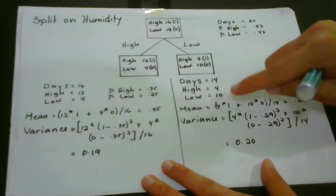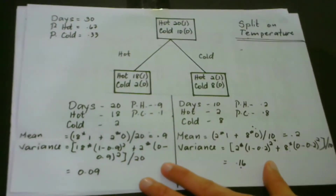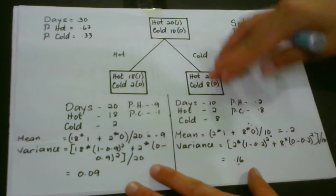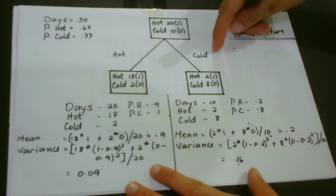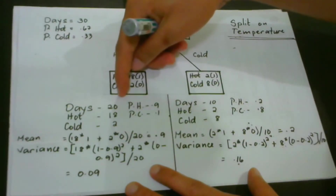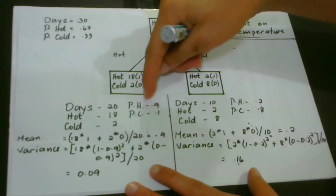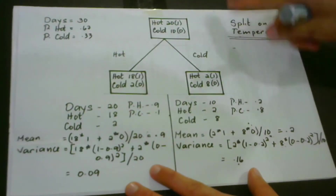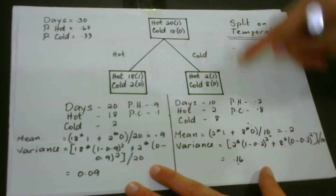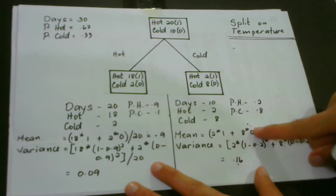Next, we consider the split on temperature, also over 30 days. We have hot and cold splits. For hot temperature, we have 20 days, with probability of hot at 0.9 and cold at 0.1. For cold temperature, we have 10 days, with probability of hot at 0.2 and cold at 0.8.